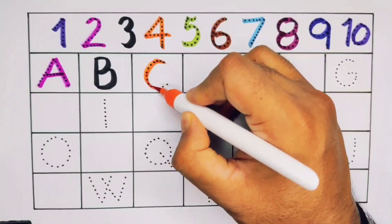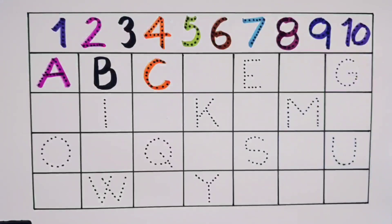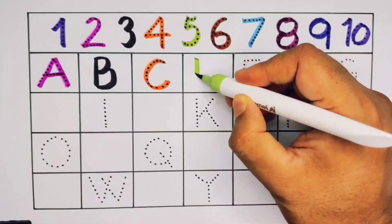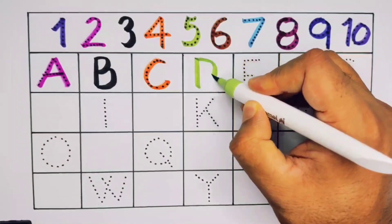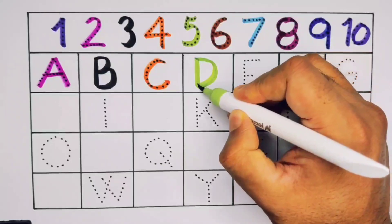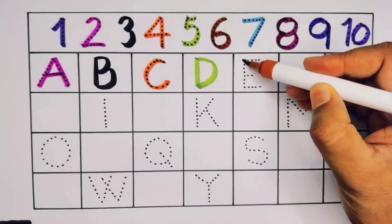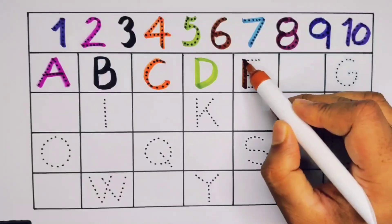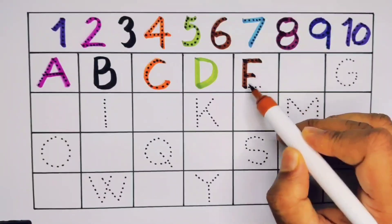What comes next, kids? It's D — D for drum, D for drum. What comes next? It's E — E for eagle, E for eagle.